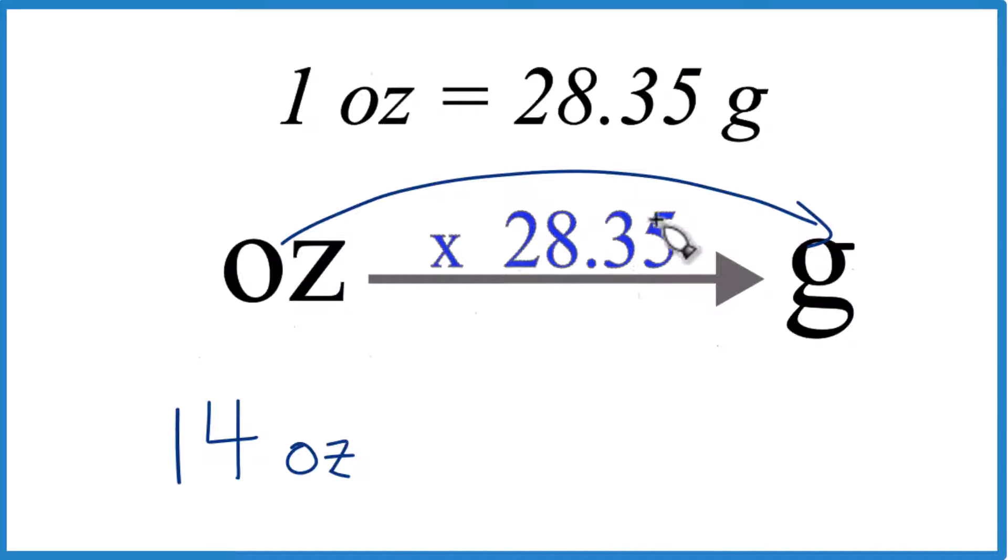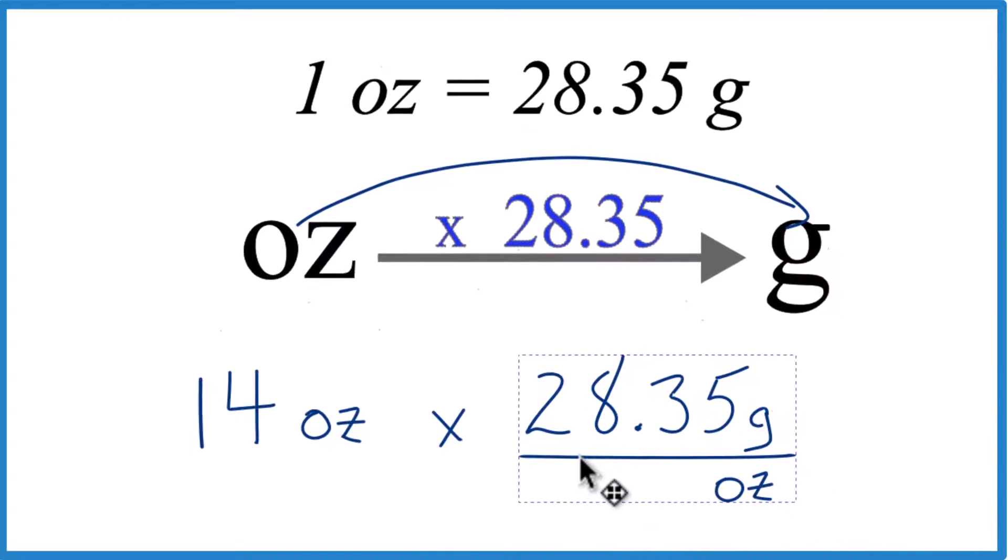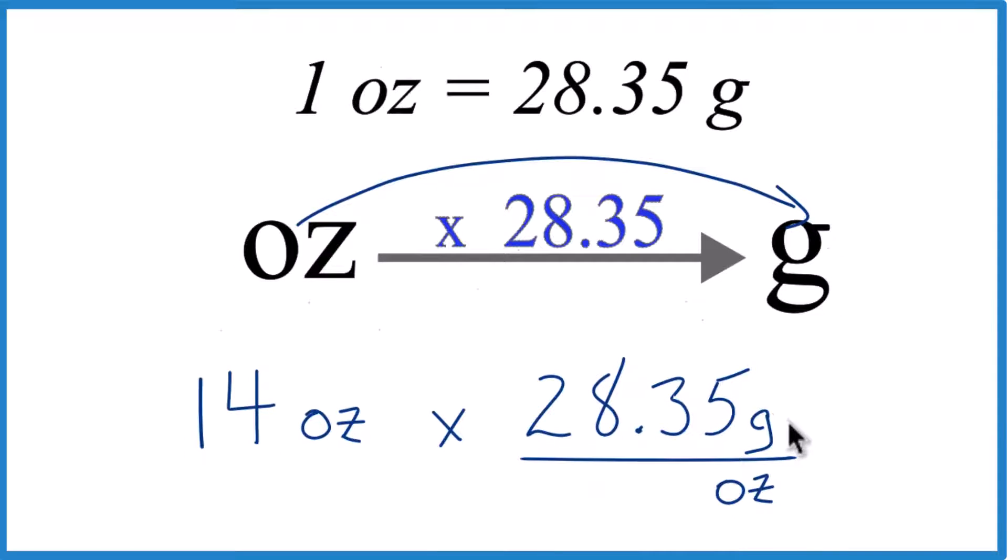If you went from grams to ounces, you could just divide by 28.35. But here we have 14 ounces, so let's just multiply that by 28.35, and that's grams per ounce.